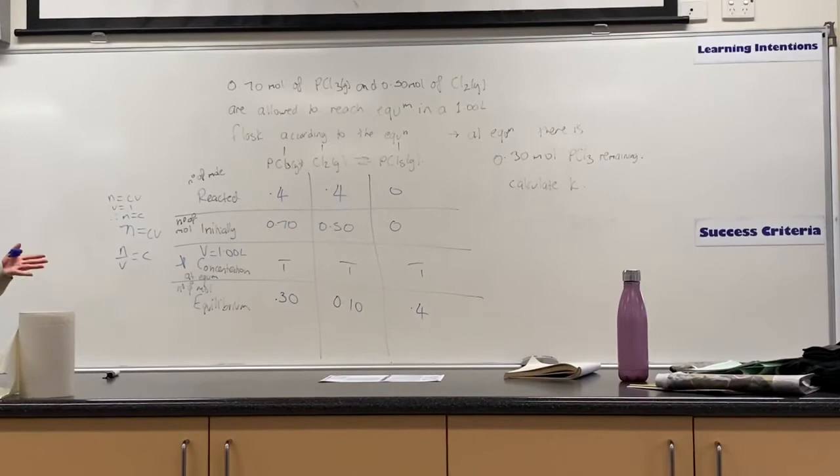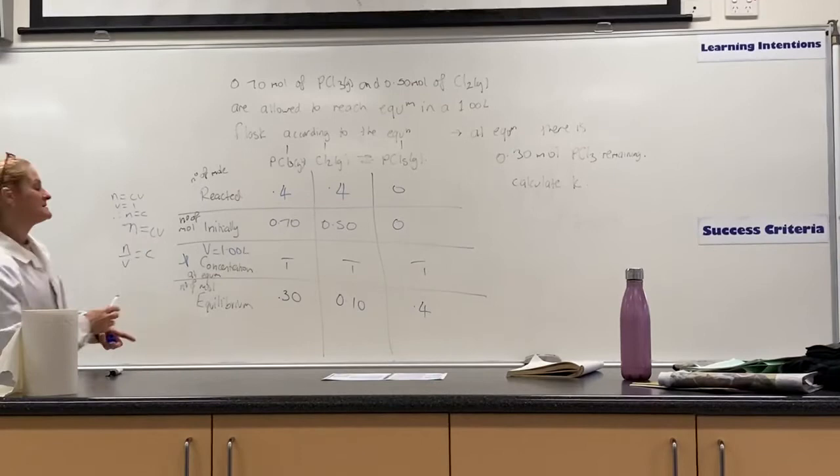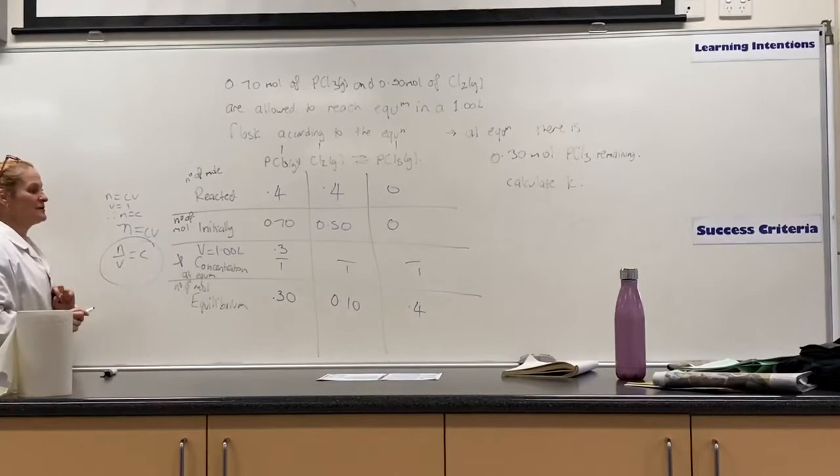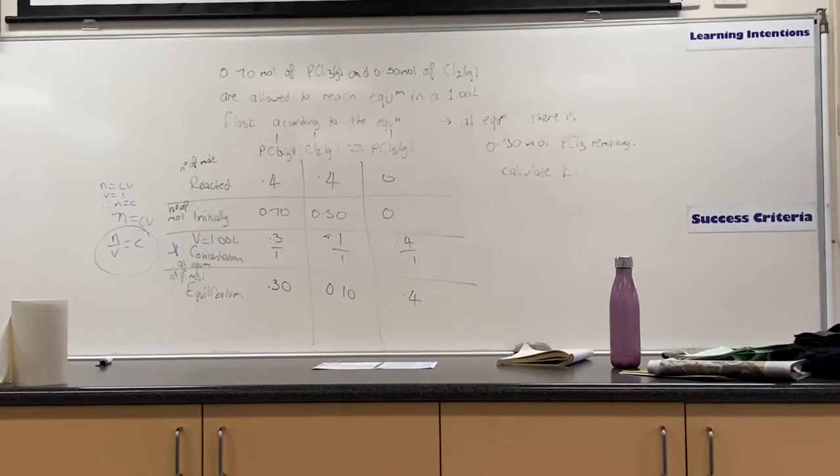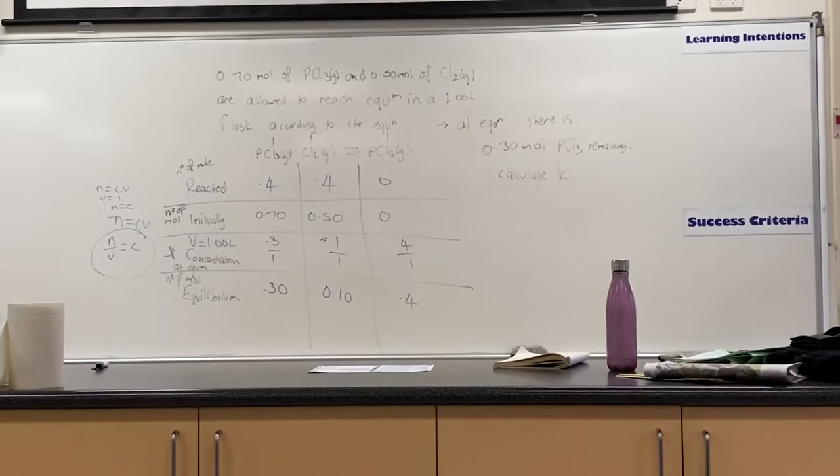So then we've got those. These are the number of moles. The bonus here is because this is a 1 liter flask, we know that concentration is N over V. So now we've got all those concentrations, which for these are exactly the same. Keep in mind, they might not always give you a 1 liter flask. You might get a 500ml flask or a 2 liter flask or a 3 liter flask. So you do have to work that with concentration.